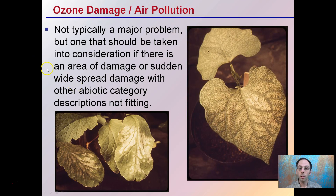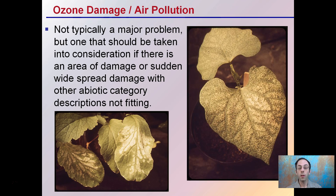Ozone or air pollution is not typically a major problem, but should be taken into consideration if there's an area of damage that is sudden or widespread, with other abiotic category descriptions not fitting what the grower is seeing. Typically you get a white or bleached look to the leaves, which can indicate potential air pollution, air contaminant, or ozone damage. This can occur in indoor or more commonly outdoor operations. If you are using an ozone method of odor control, be mindful — if it's not functioning properly, that could potentially cause ozone damage to the plants.